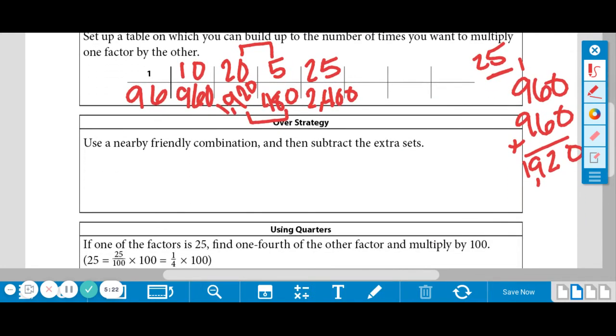Okay. All right. Our next strategy is over strategy. So make a little subtitle of that. I'm going to point it out. All right. So for an over strategy, use a nearby friendly combination and then subtract the extra set. That sounds very complicated, but we'll work through it.